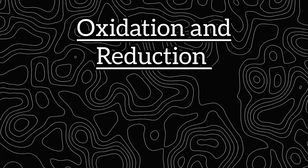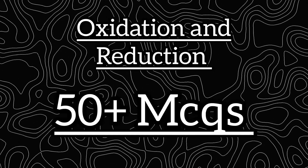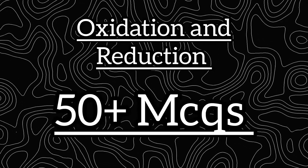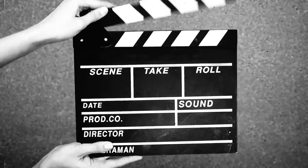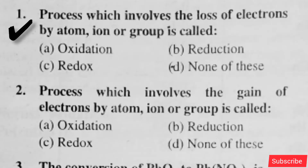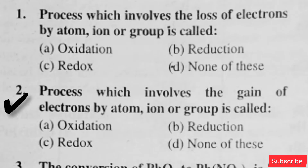In today's video we will solve 50 plus MCQ questions. Question number one: which process involves the loss of electrons by atom, ion or group? It is called oxidation — option A is right. The process which involves the gain of electrons by atom, ion or group is called reduction — option B is right.